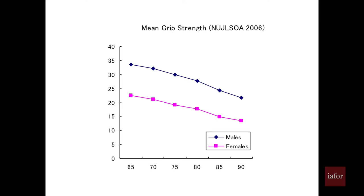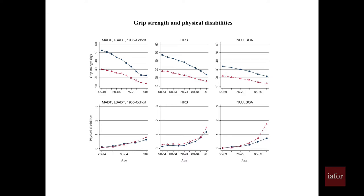The anchoring vignettes may help adjust for differences in health status reporting by ethnic group, based on the Singaporean study. Looking at grip strength data comparing men and women across age groups, it decreases as expected. In a comparative study of the U.S., Japan, and Denmark, grip strength is highest for Denmark, followed by the U.S., and lowest for Japan — yet Japanese have the longest life expectancy among those three countries.